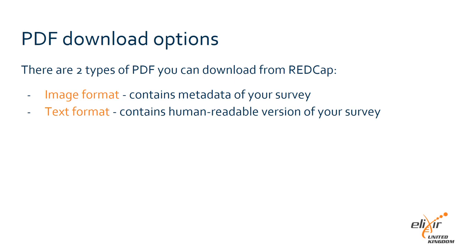The field label and any field attributes such as field type and code lists. The PDF in text format shows your survey as it appears to someone submitting data, i.e. in a human readable format without variable names and code lists.